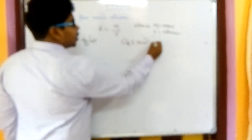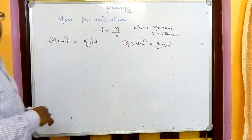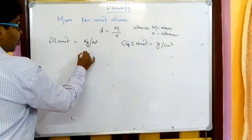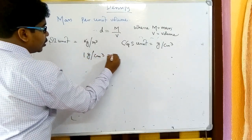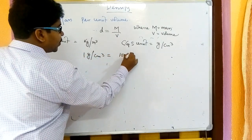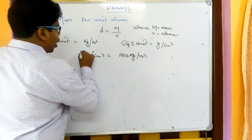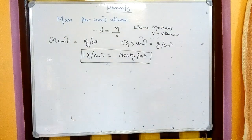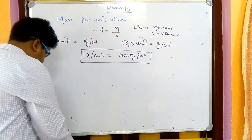The CGS unit is gram per centimeter cube. We found the relation between them: 1 gram per centimeter cube equals 1000 kg per meter cube. We derived this in the previous class, so there shouldn't be any doubt regarding that.